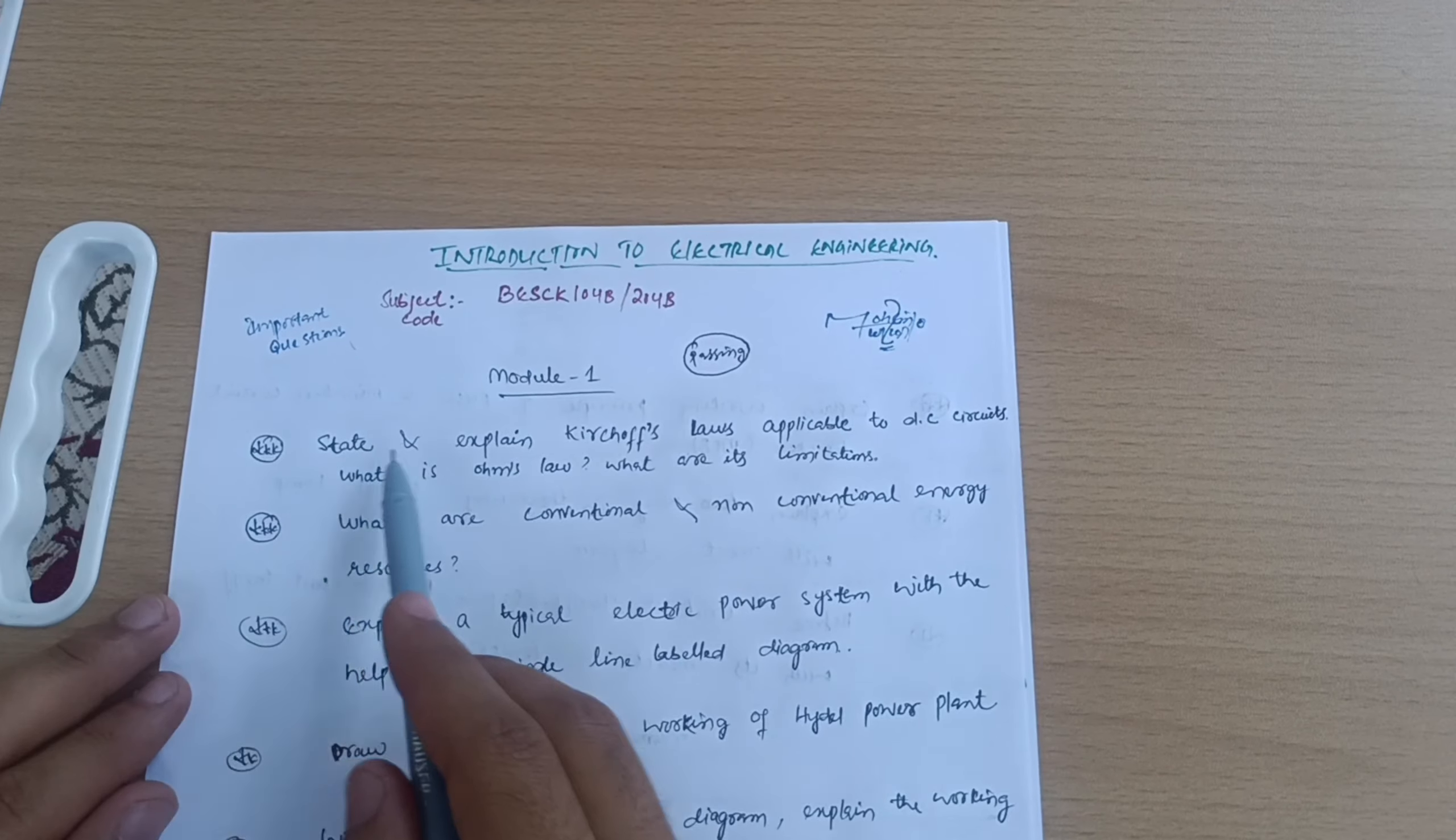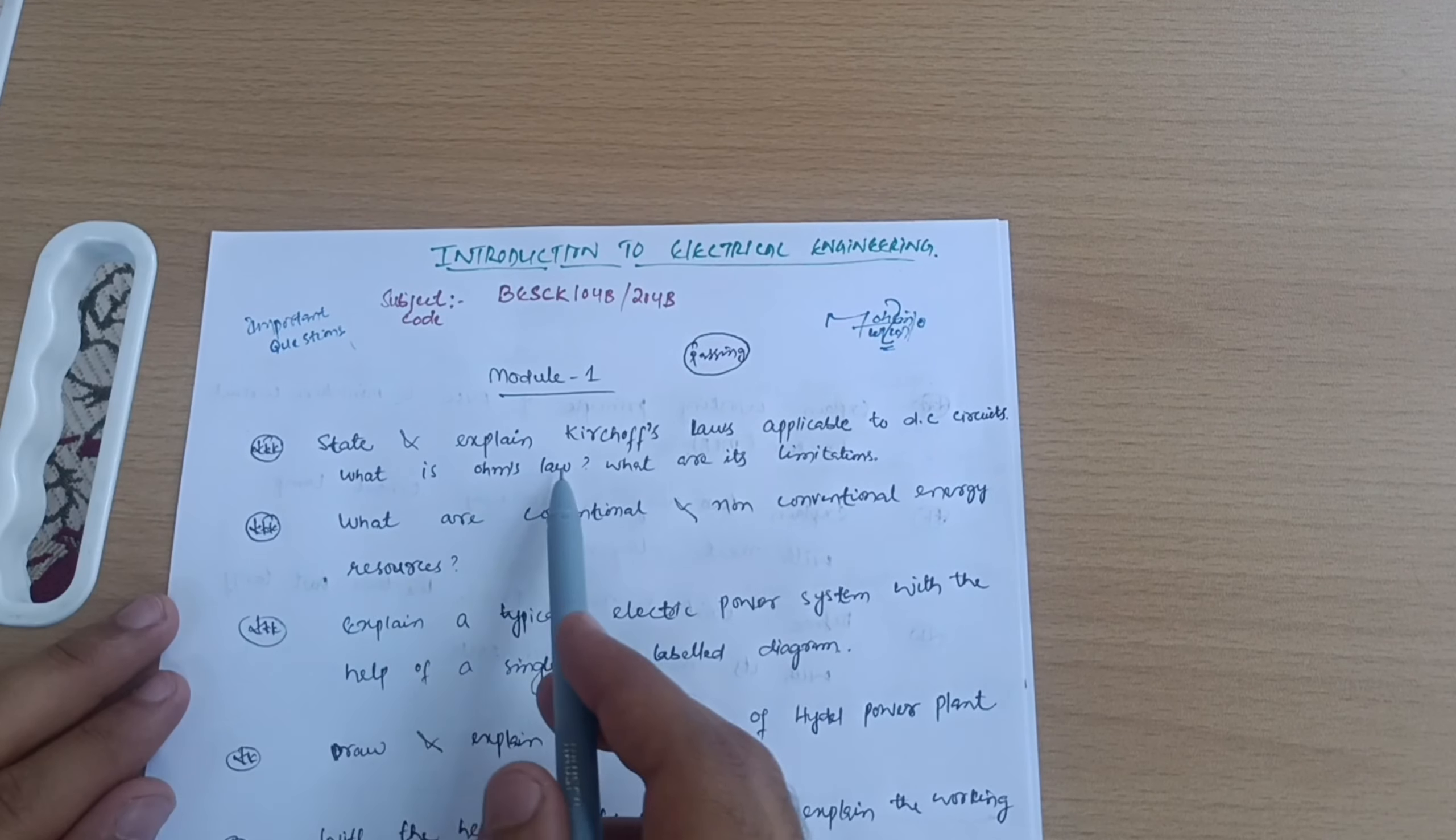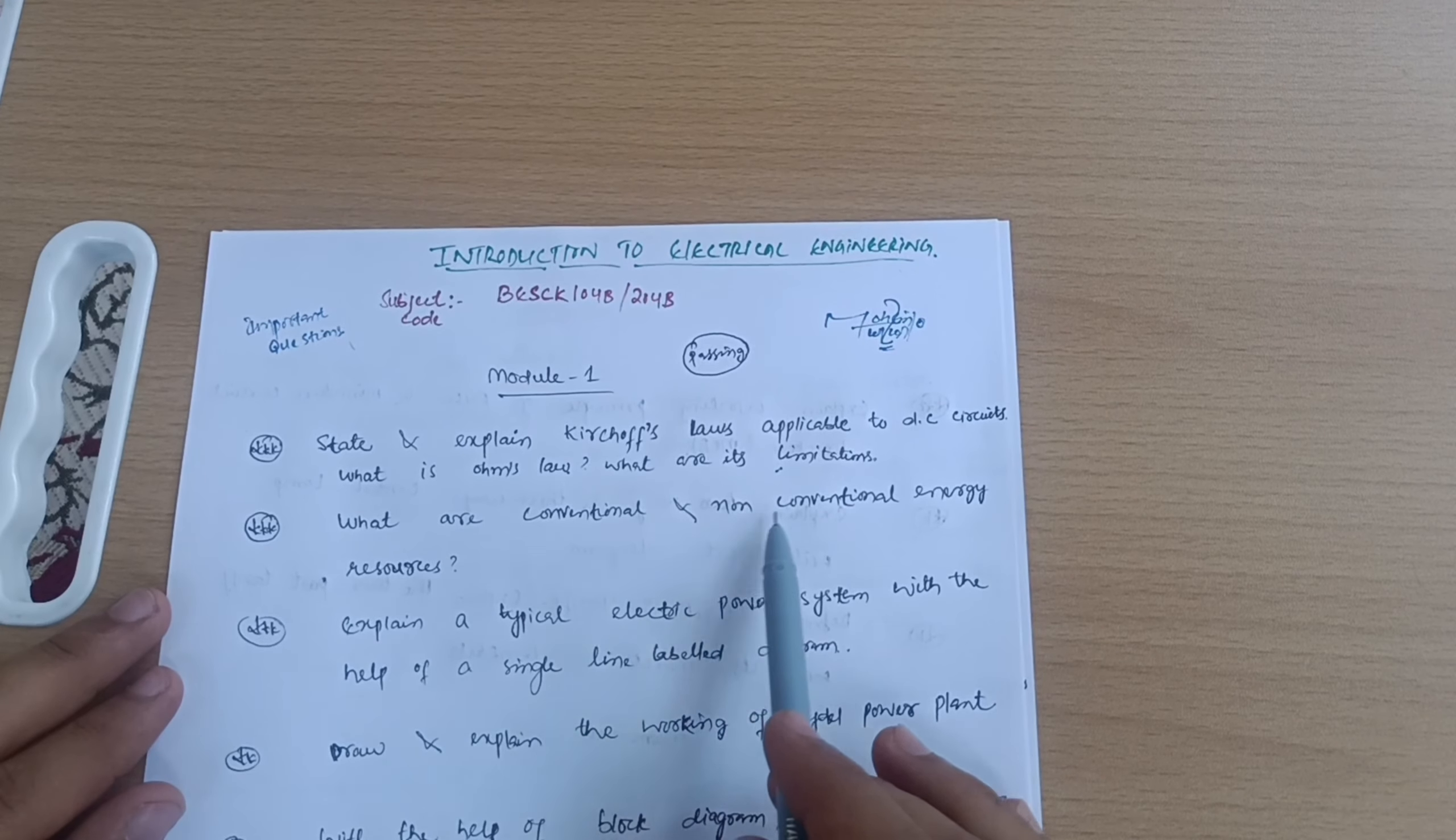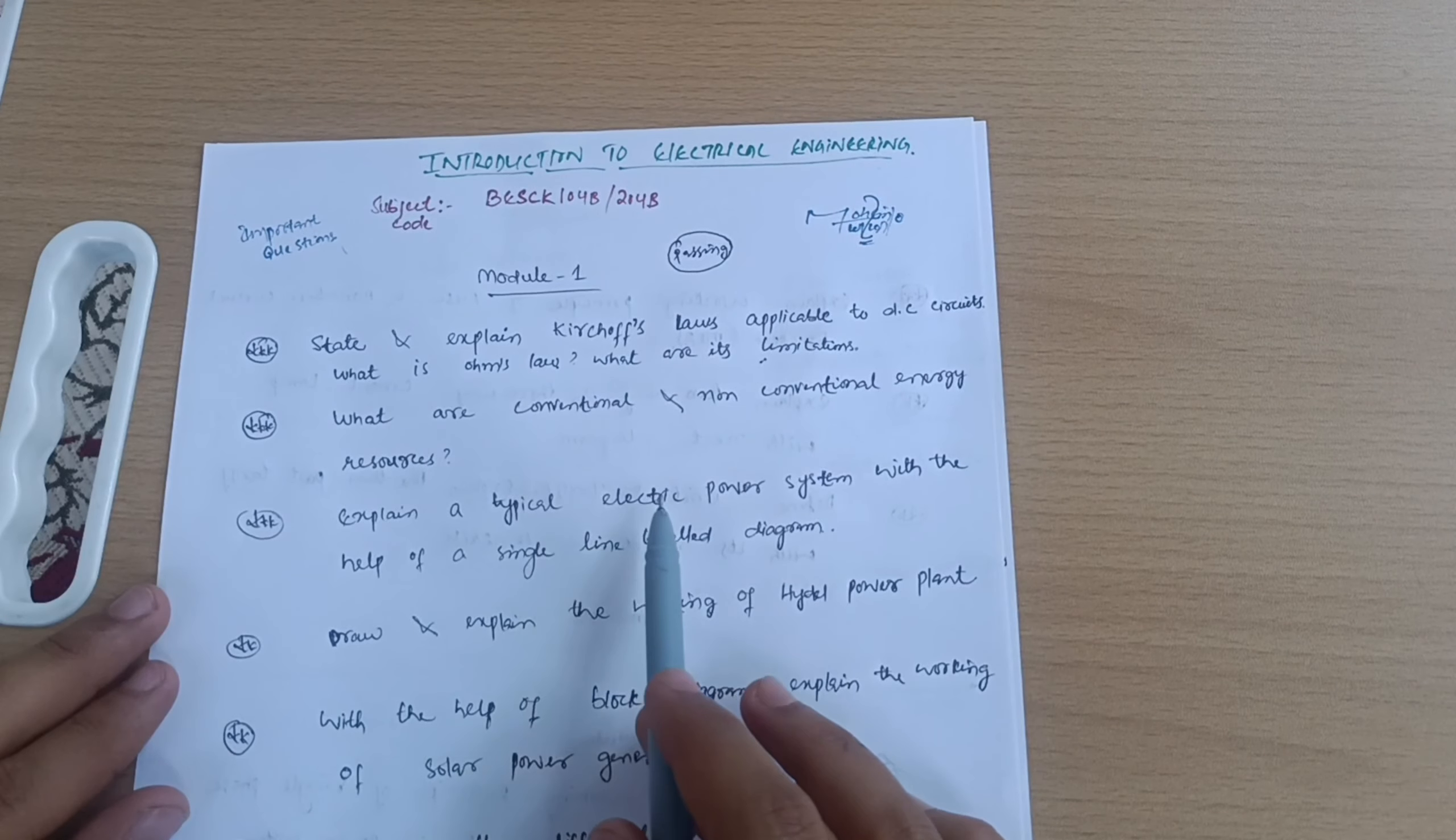First super important question: State and expand Kirchhoff's laws applicable to DC circuits. What is Ohm's law and what are its limitations? Next is what are conventional and non-conventional energy sources. Explain a typical electric power system with the help of a single line labeled diagram.